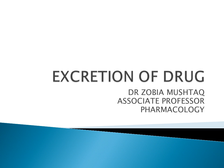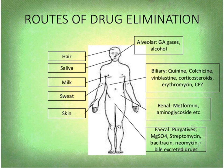Today we are going to discuss the last part of pharmacokinetics, that is excretion or elimination of drug. Excretion is the passage out of systemically absorbed drugs. Drugs and their metabolites get excreted via different routes; the most important route is urine, and then feces.